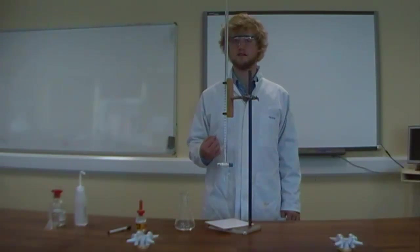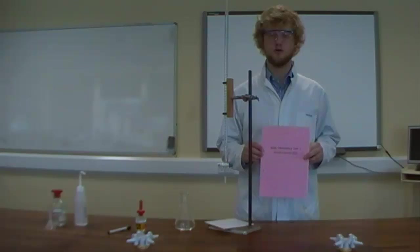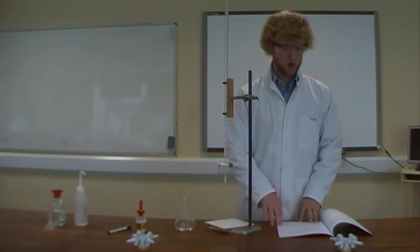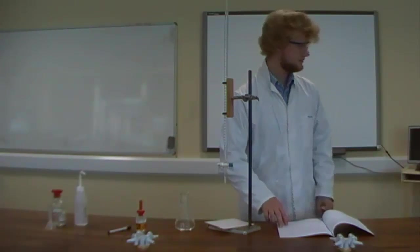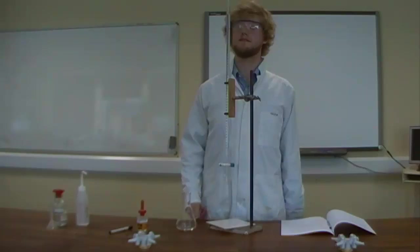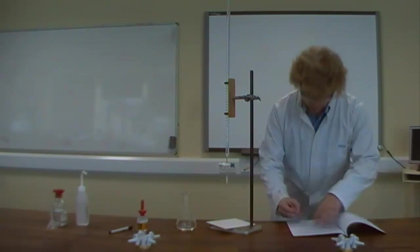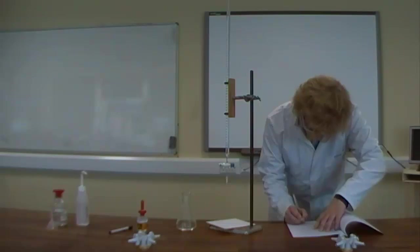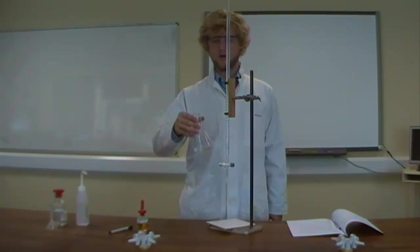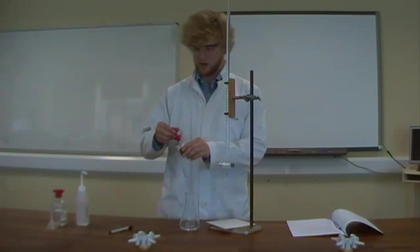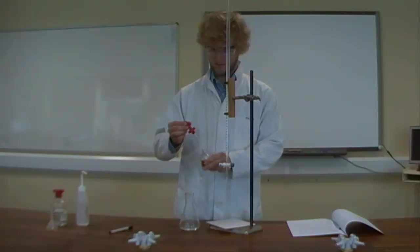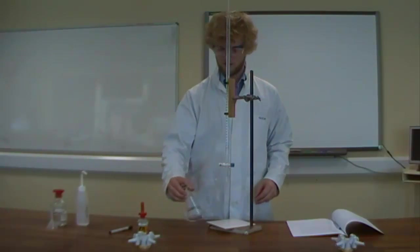At this stage, we're ready to start our titration. You're going to want to make sure that you've got your practical booklet at hand. Open that up so that you have your results table there. Now double check your starting reading. It should be on 0.00 ml and fill that into your rough reading there. Then take your acid and add a couple of drops, four or five drops of phenolphthalein. And then make sure that is well mixed in.